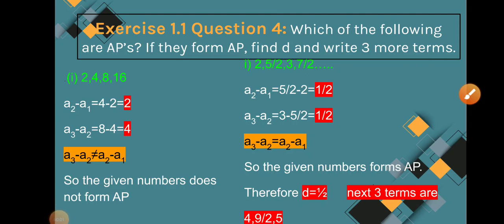Question 4: Which of the following are APs? If they form an AP, find D and write 3 more terms. The first sequence given is 2, 4, 8, 16.